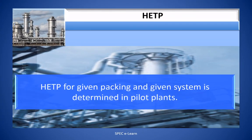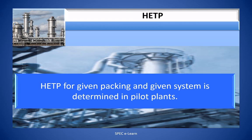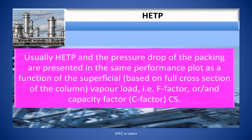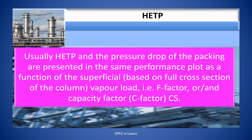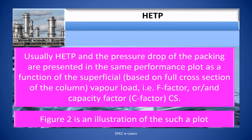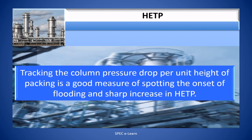HETP for a given packing and system is determined in pilot plants. Usually, HETP and the pressure drop of the packing are presented in a performance plot as a function of superficial vapor load (a capacity factor based on the full cross-section of the column). Tracking the column pressure drop per unit height of packing is a good measure for spotting the onset of flooding and the sharp increase in HETP.